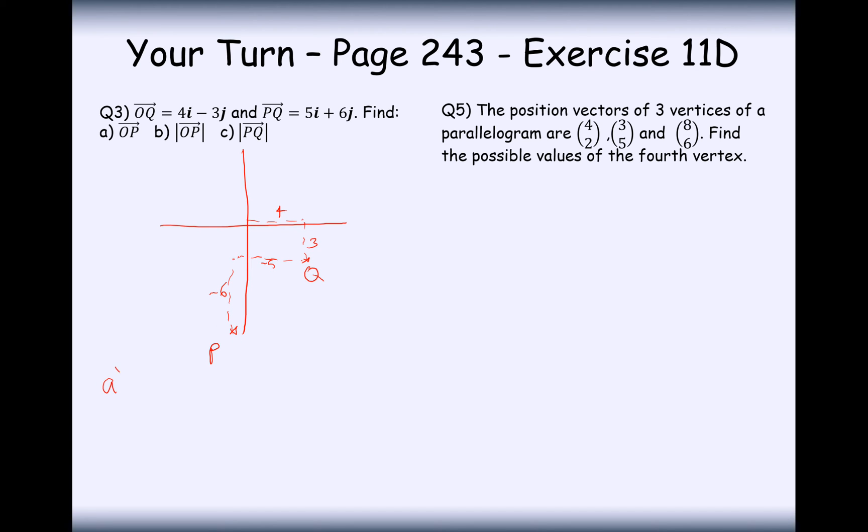Let's have a look at how we find the vector from O to P. This is going to be, if we've moved forward by 4 and back by 5, then that's going to be backwards by 1, so minus 1i. And if we've moved down by 3 and then down by another 6, then that's going to be minus 9j. So that's the answer for part A.